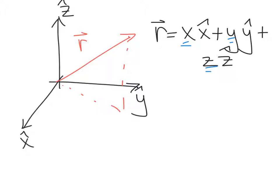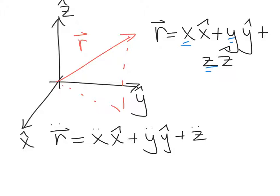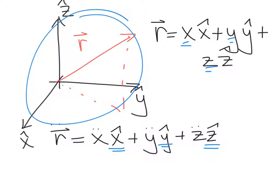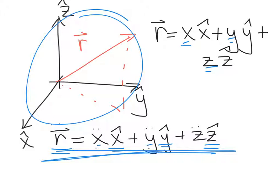That's very convenient — the time derivative of a vector in the Cartesian coordinate system is simply the time derivative of each individual coordinate. This is one of the reasons Cartesian coordinates are so convenient: writing the time derivative is very simple. The reason is that the basis vectors x hat, y hat, and z hat are constant with time — we place our Cartesian coordinate system somewhere in space and leave it there. In other coordinate systems, the basis vectors change with time, making the time derivative more complicated. So our R double dot vector is just x double dot, y double dot, and z double dot.